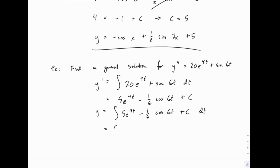So integrating again, we would get 5 fourths e to the 4t minus 1 over 36 sine of 6t plus c times t, and then we need another arbitrary constant. So let's call this first c, c1, and then we'll have plus c2.